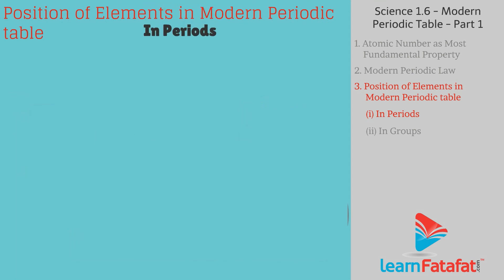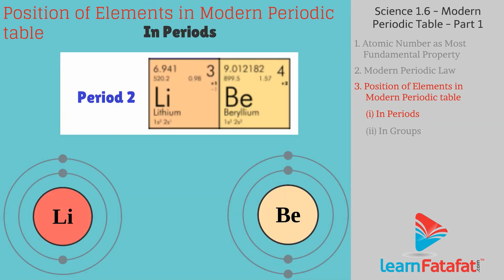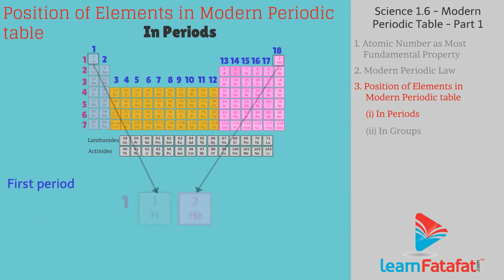In Periods: Elements of the same period have same number of shells. The number of shells are equal to the number of respective period. The first period has only 2 elements, hence it is the shortest period.